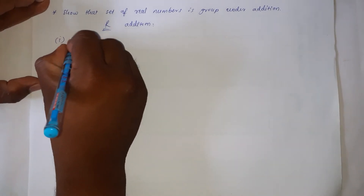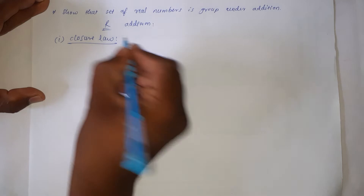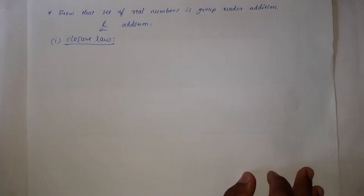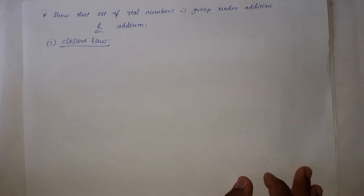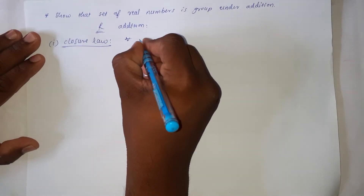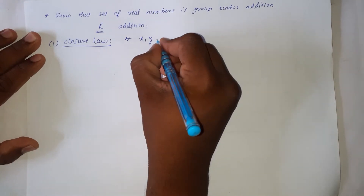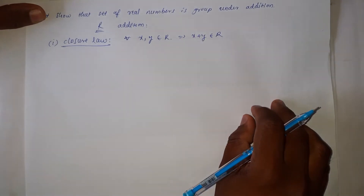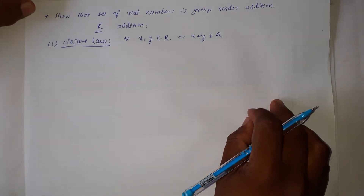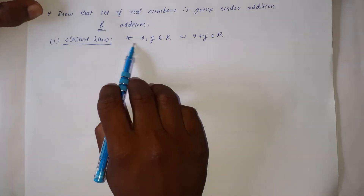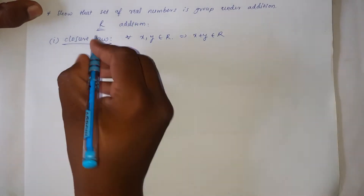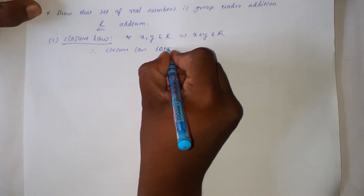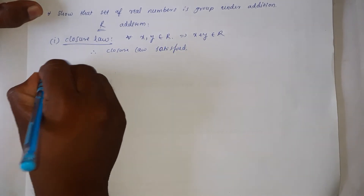The first law is the closure law. We know that the sum of any two real numbers is again a real number. Therefore, for all x, y belonging to R, it implies that x plus y belongs to R. Hence, closure law is satisfied.